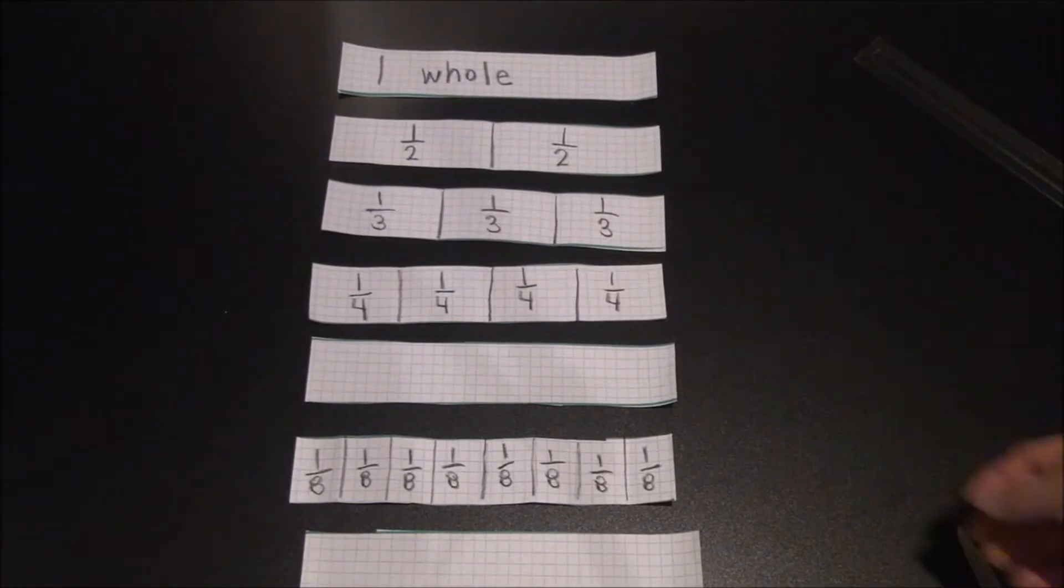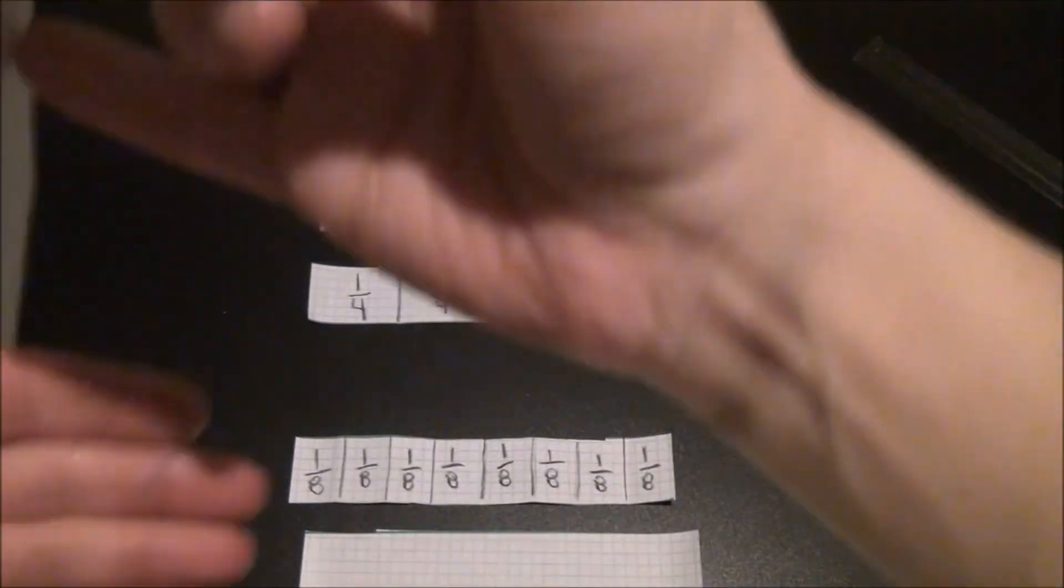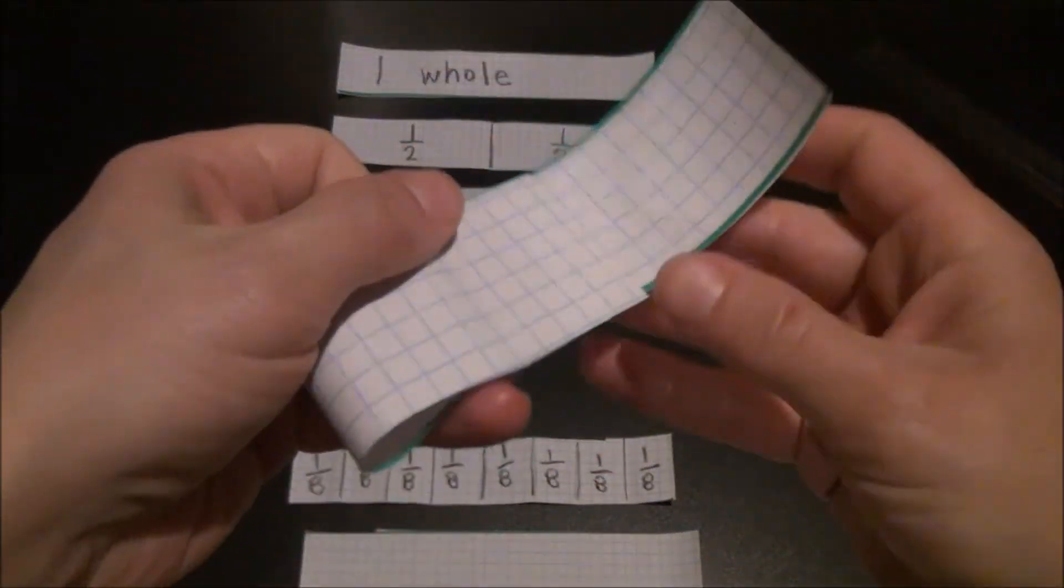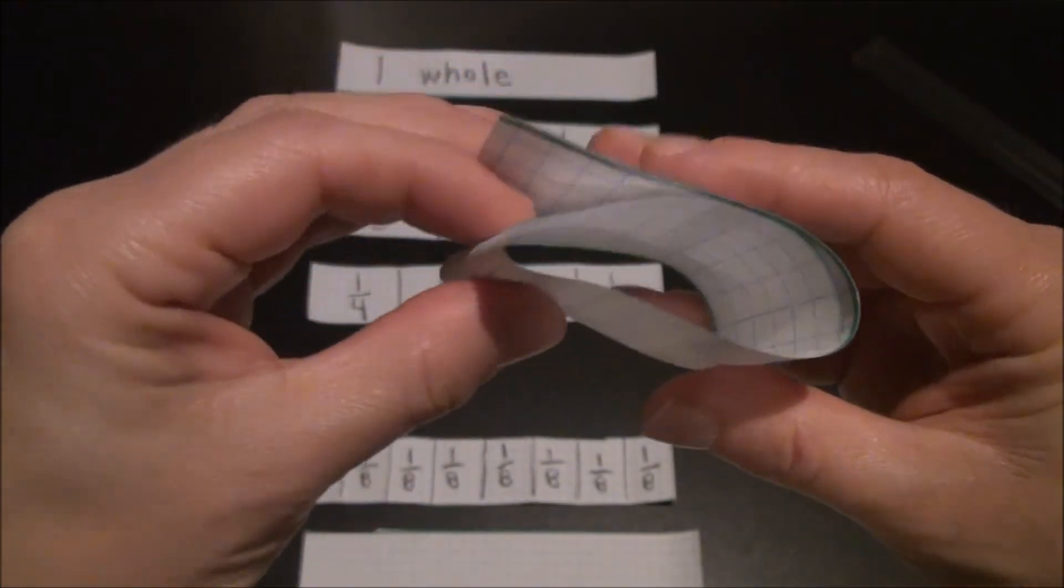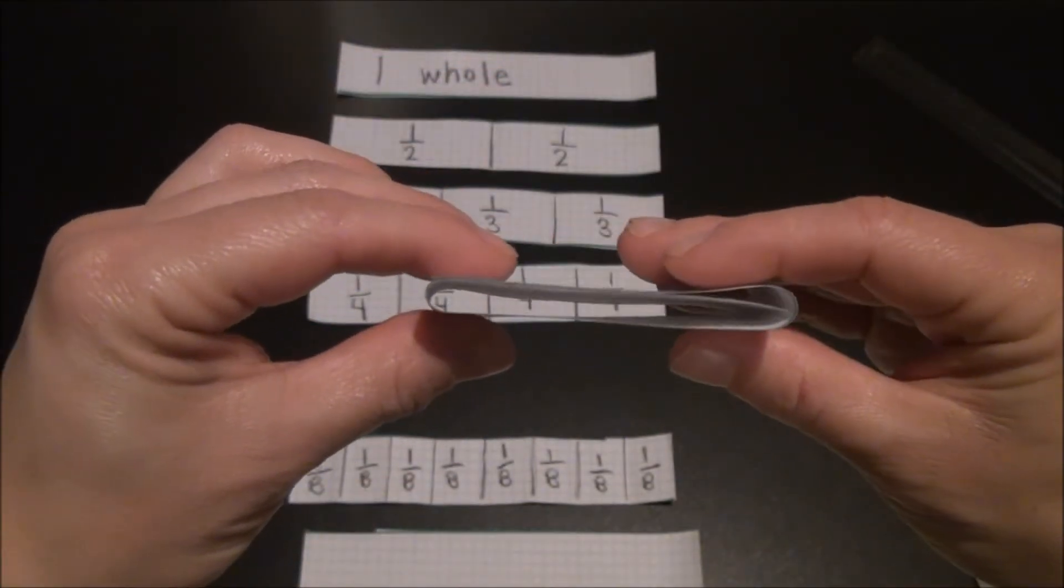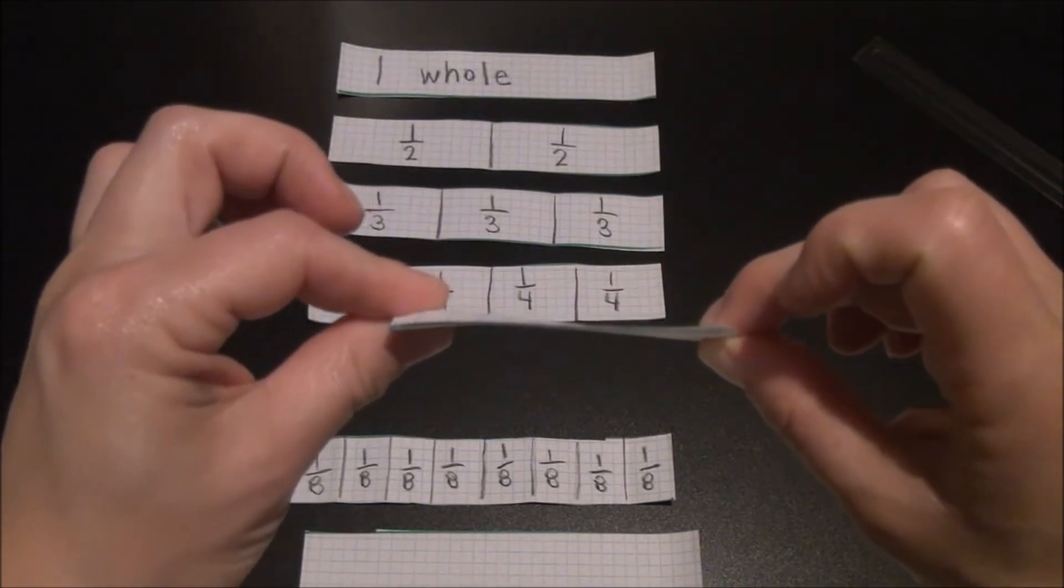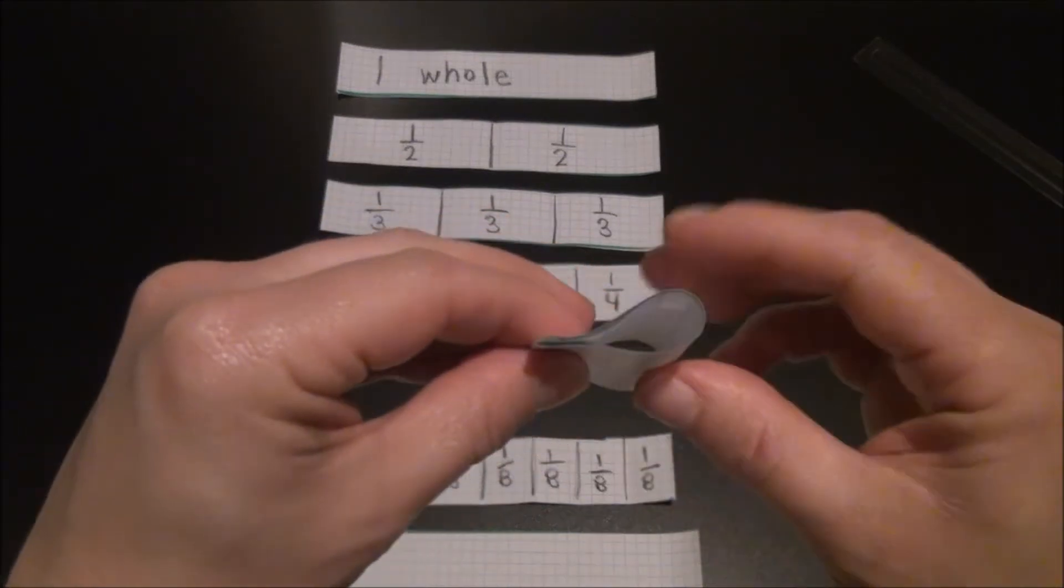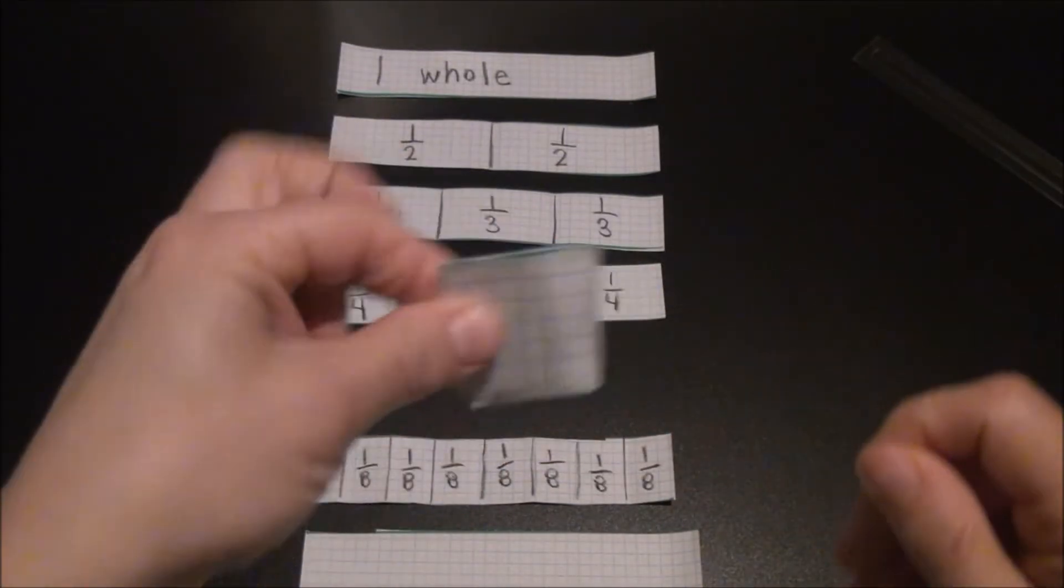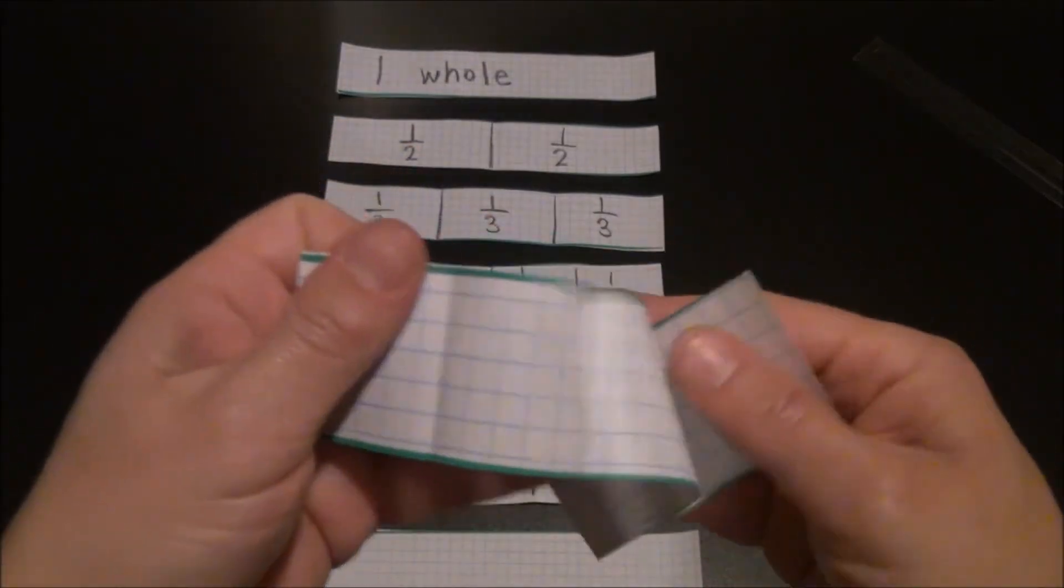Now that we have done our thirds, it will be a little bit easier to do our sixths. Again, for the sixths, you are going to start by folding this into thirds. Imagine your burrito. Try to get each part of your burrito as equal in size as possible. When you have it, smush it down. And there are my thirds. Now, if I fold my thirds in half, I now have six. Make sure to trace your folds and label your parts.